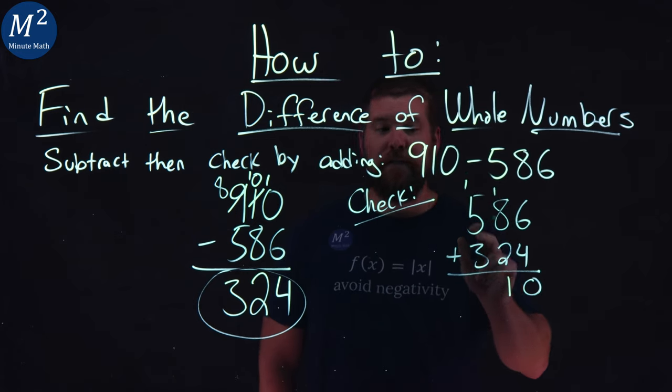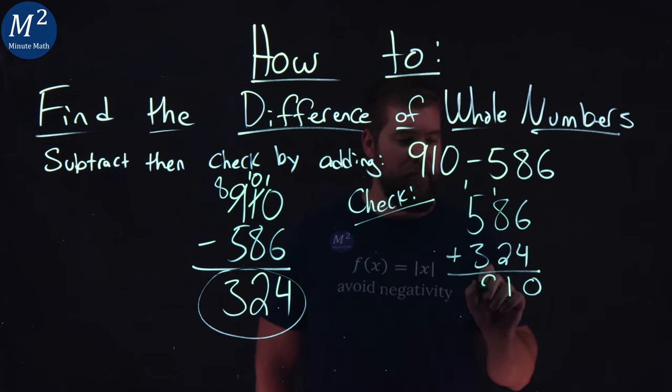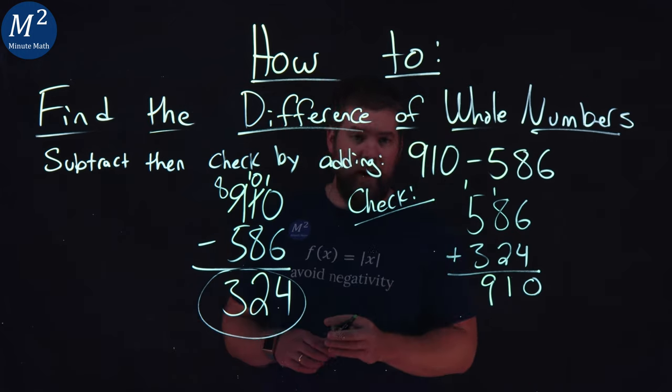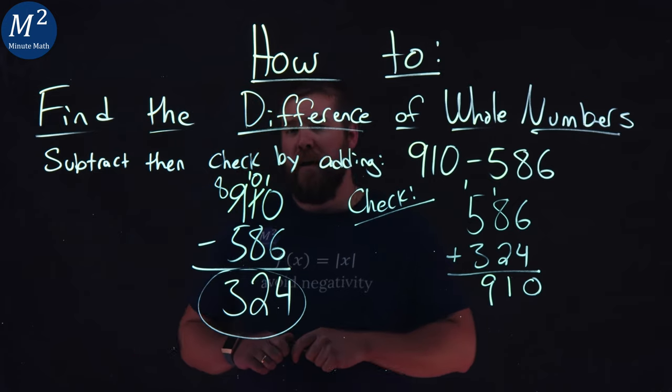5 plus 3 is 8, plus 1 is 9. And we've got 910 like we should, confirming that our answer here for 910 minus 586 is 324.